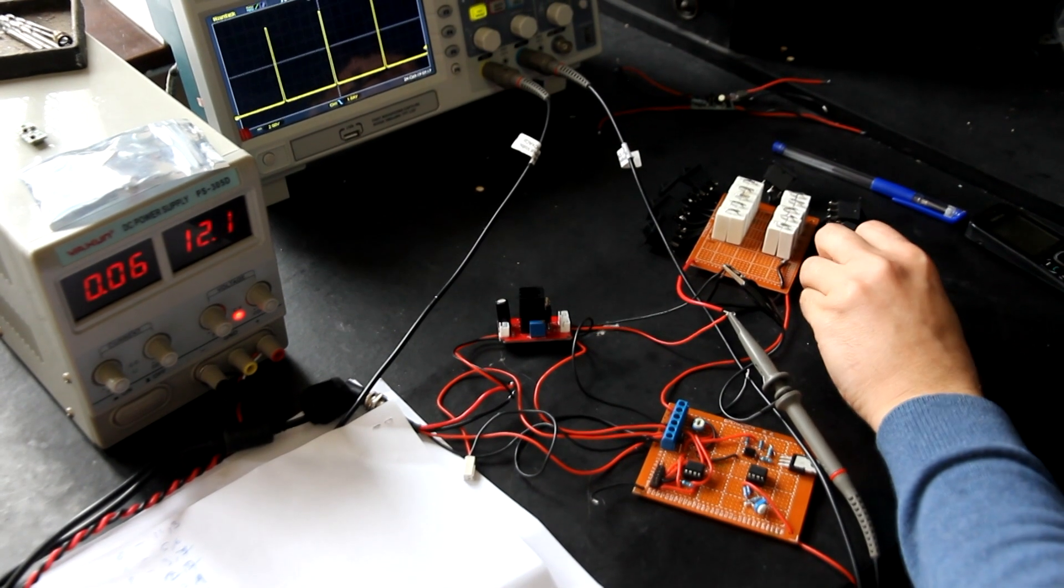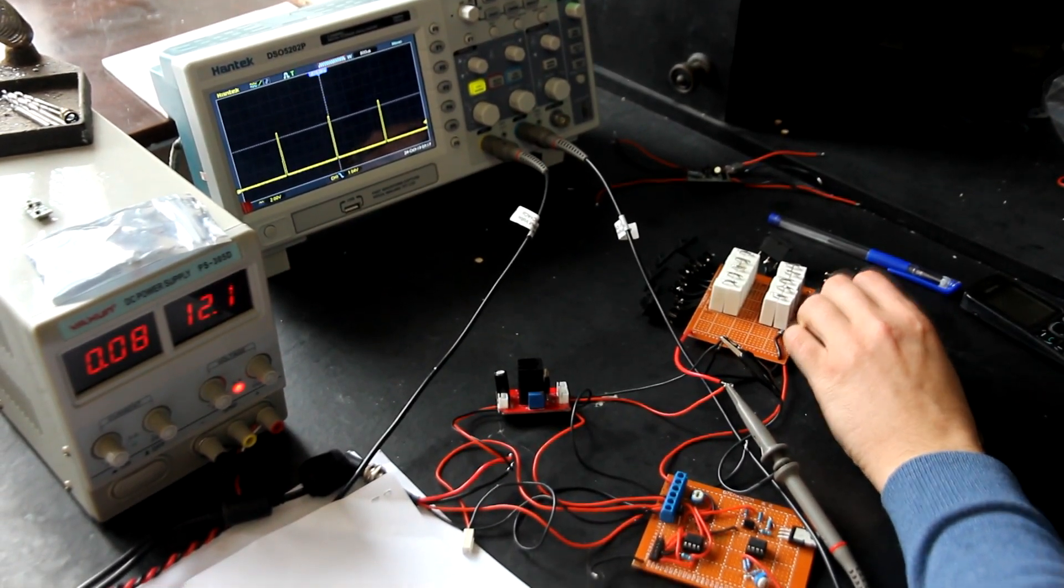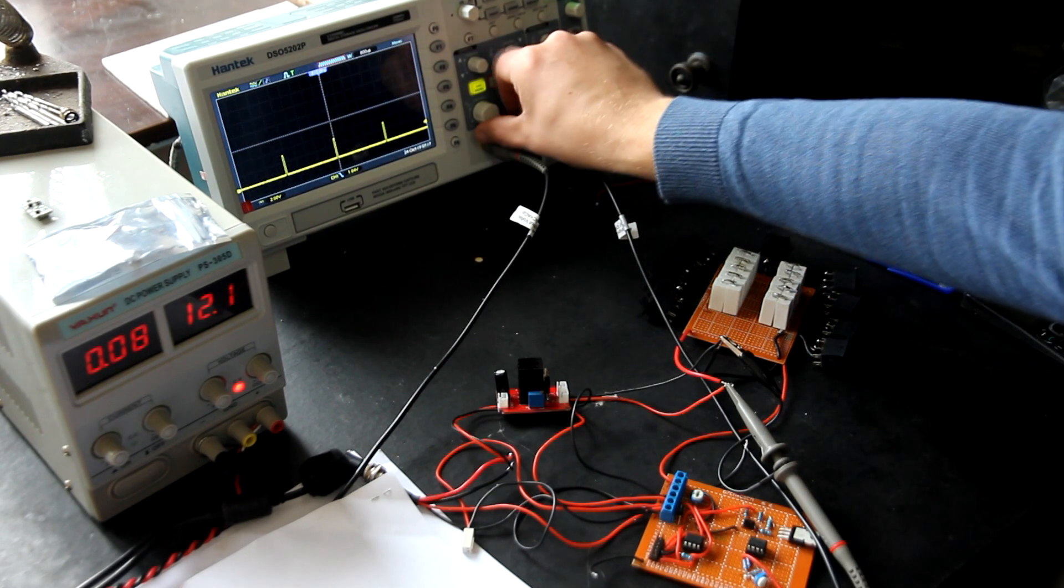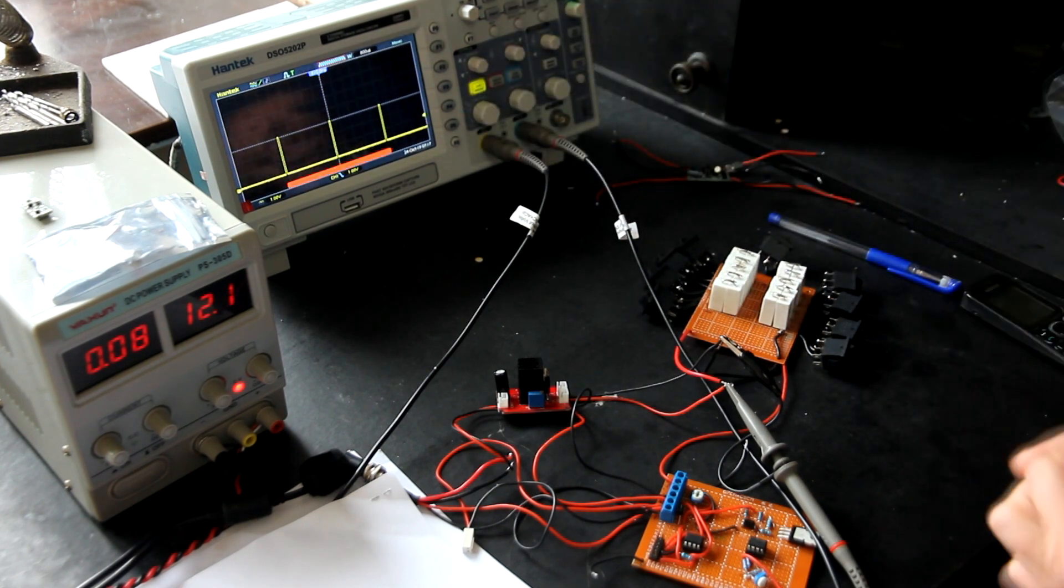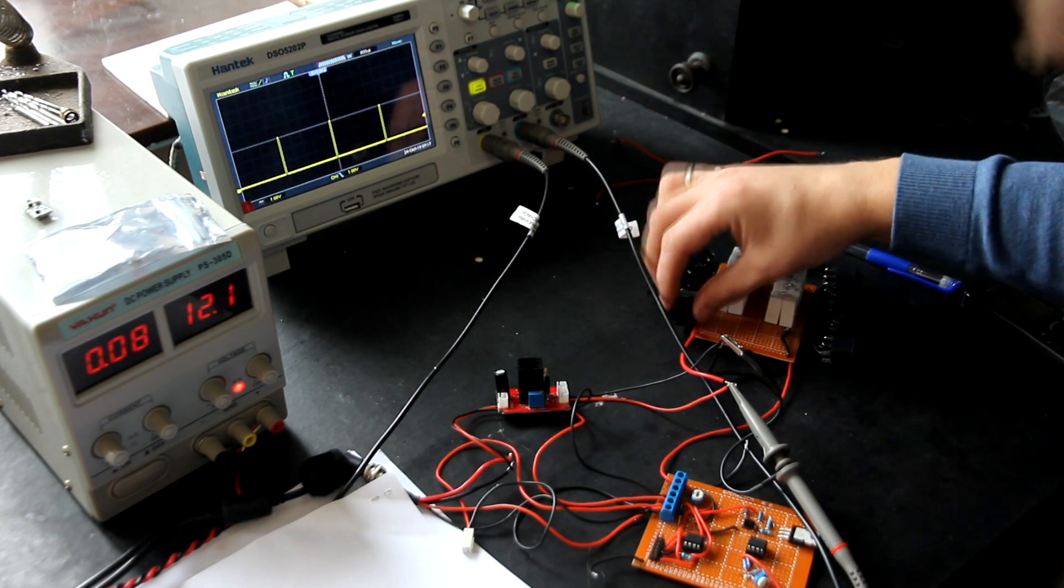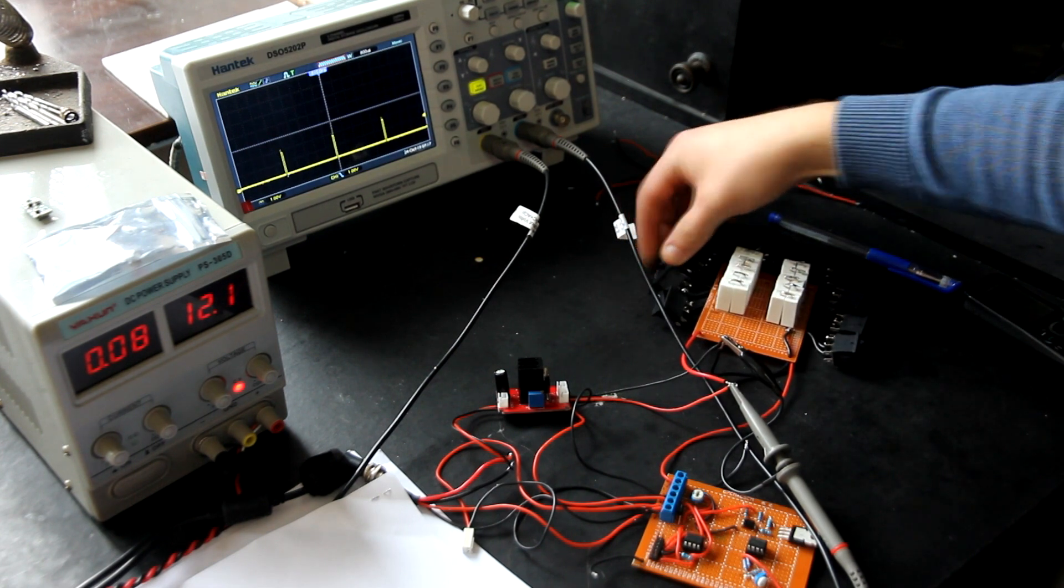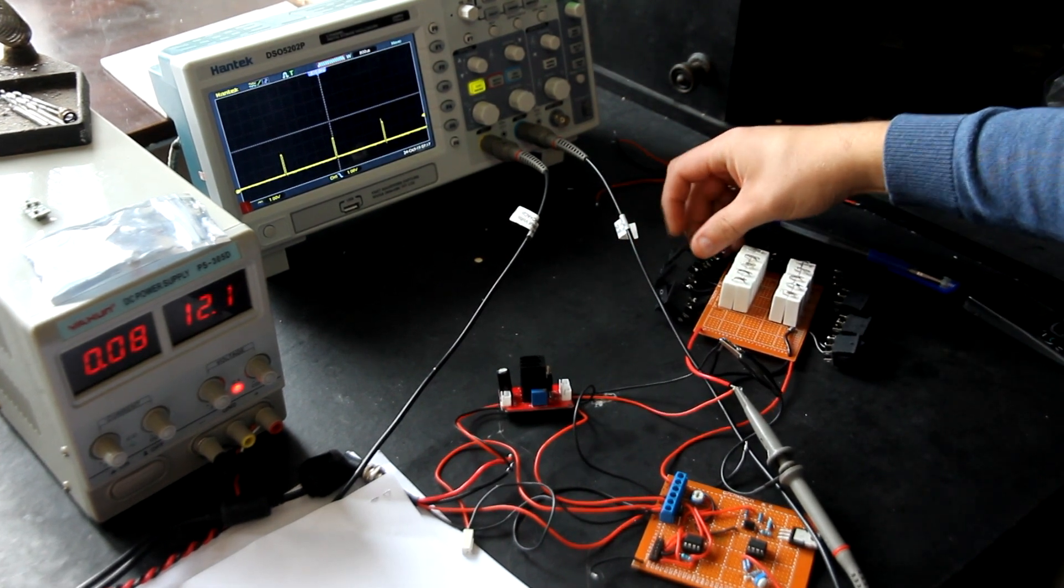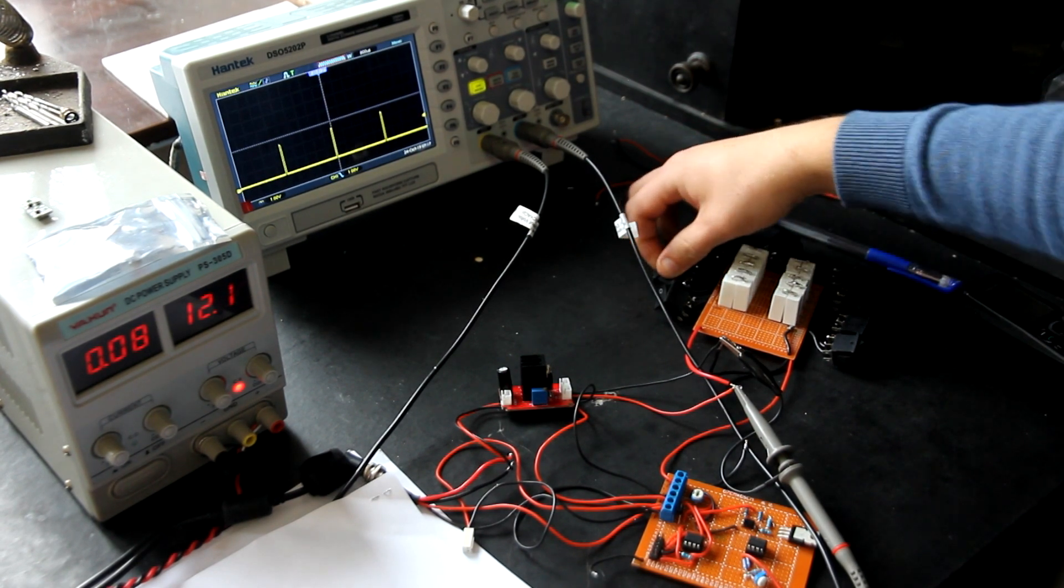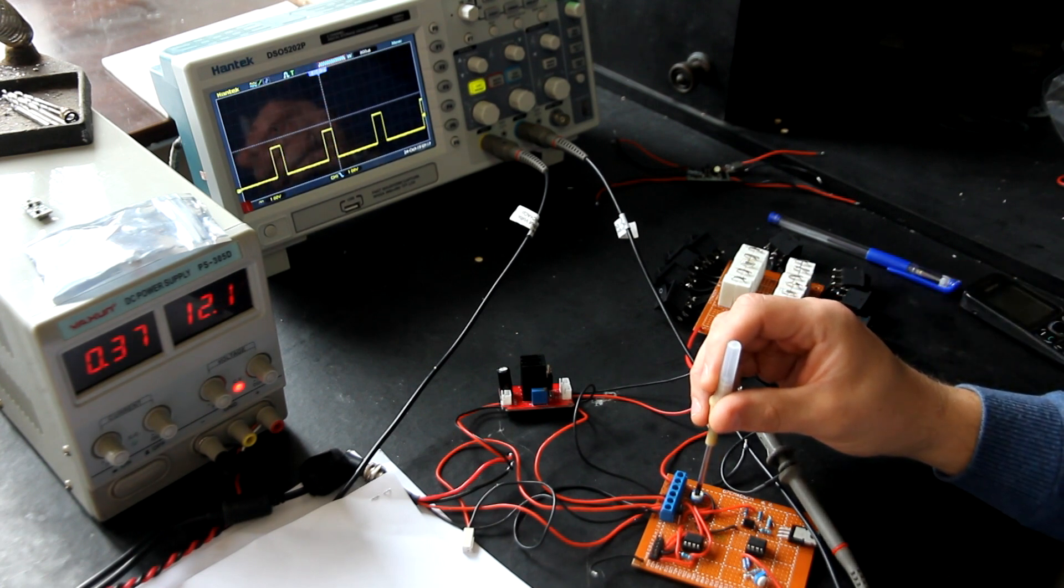Let's show the result. We are changing resistance and you can see that it actually stabilizes quite well on the oscilloscope. Let's increase to three amps and see.